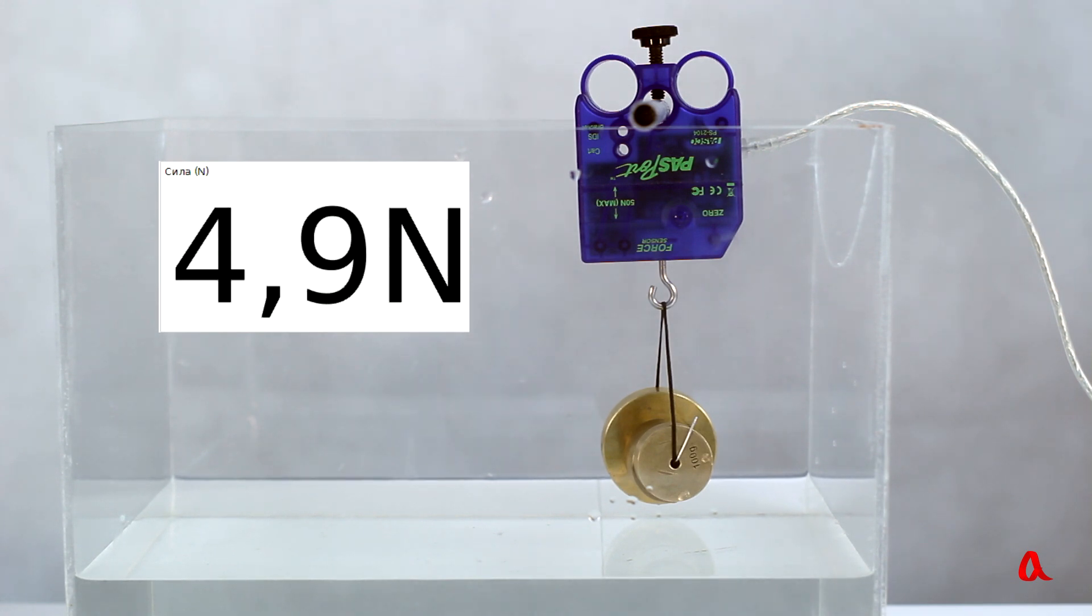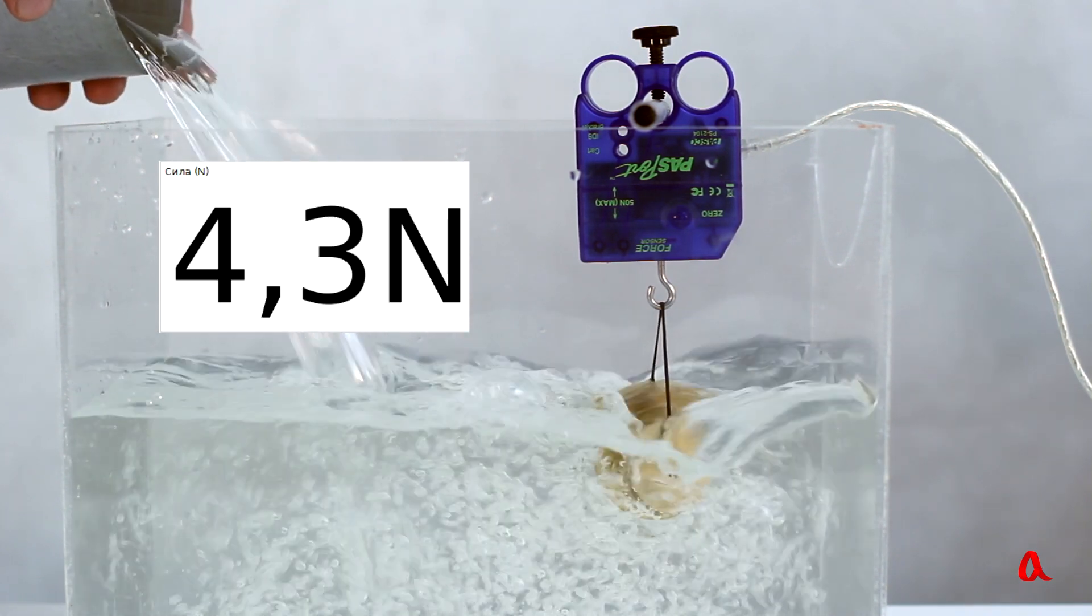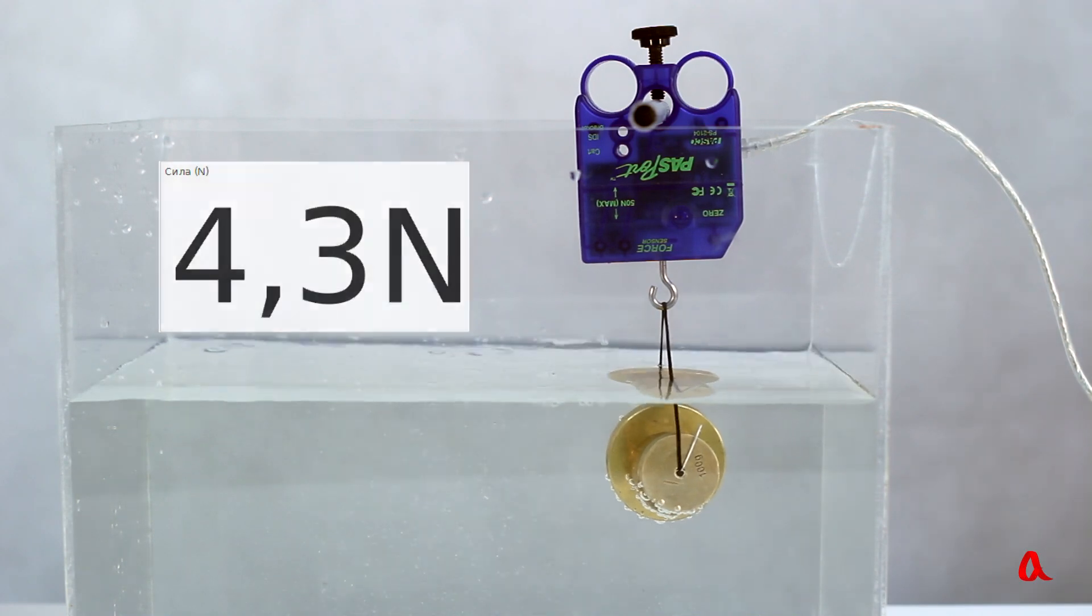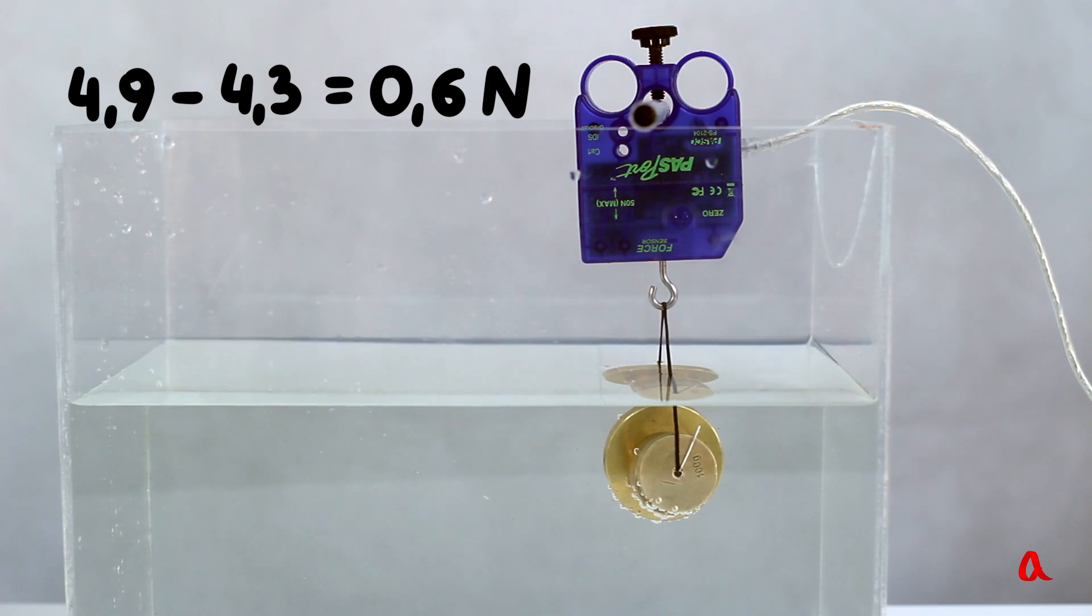Let us add some water to the tank so that the loads would fully submerge. Now the figure on the sensor is 4.3N. That means the weight of the loads is 0.6N less. According to Archimedes principle, this is the weight of the water in the volume of the loads.